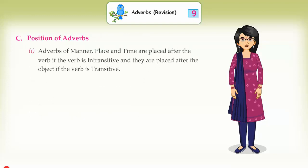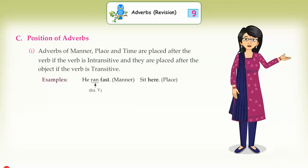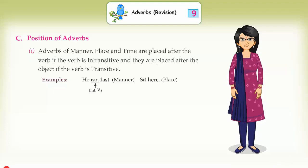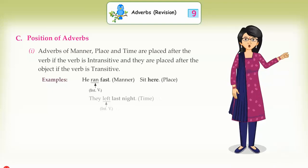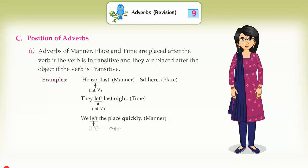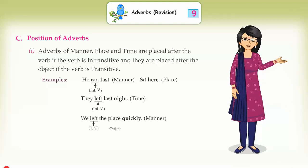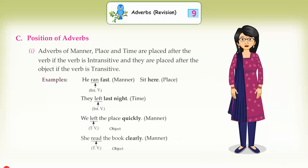C: Position of adverbs. (1) Adverbs of manner, place, and time are placed after the verb if the verb is intransitive, and after the object if the verb is transitive. Examples: He ran fast (intransitive verb, manner). Sit here (place). They left last night (intransitive verb, time). We left the place quickly (transitive verb, manner, object).